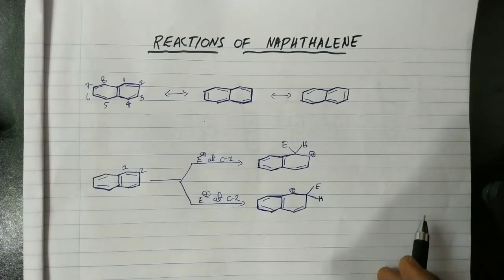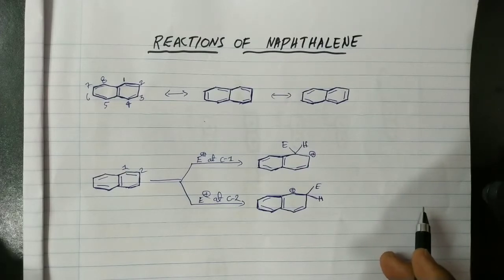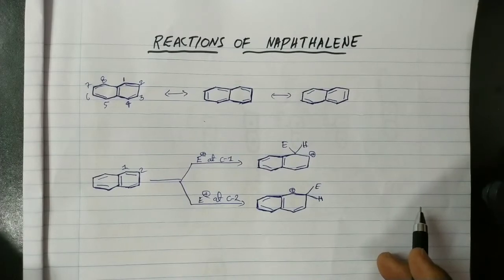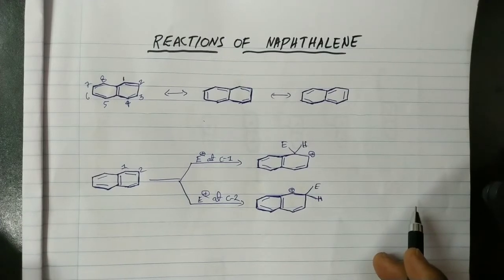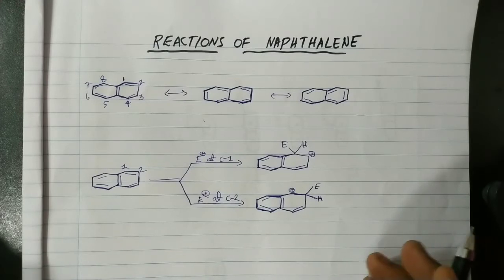Hello students, here I am discussing reactions of naphthalene. You know that benzene has two resonant structures and all carbon-carbon bonds are of equal length, but in naphthalene it has three resonant structures and two types of carbon-carbon bonds — that means all carbon-carbon bonds are not equal. I did one video on resonant structures of the fused aromatic compounds; that link I will share in the description.